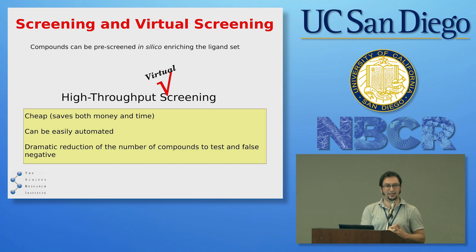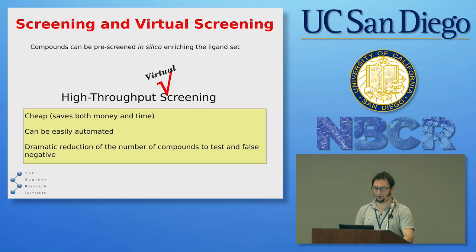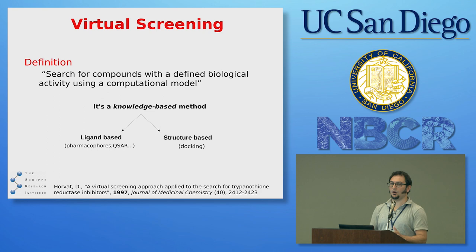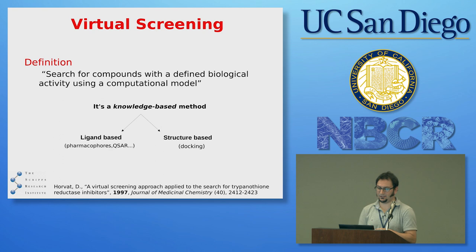The advantage of a high-throughput virtual screening is that you try to simulate what's going to happen in your system in silico. It is cheap by definition — it saves money and time — and it is intrinsically automatable. The main goal of a virtual screening is to reduce the number of actual compounds you're going to test. Don't expect to run a virtual screening and find the active compound directly. What happens is you prioritize your library of compounds to test.